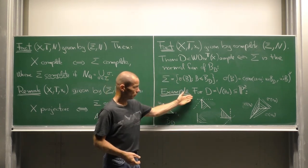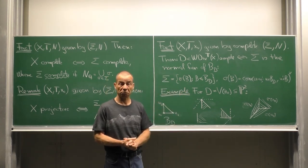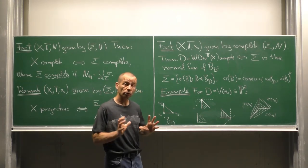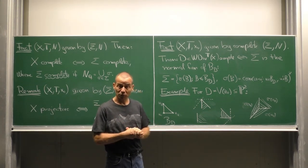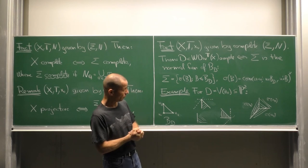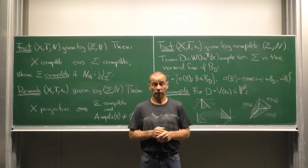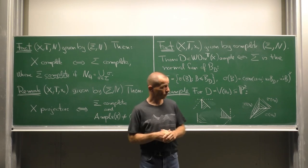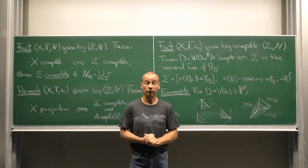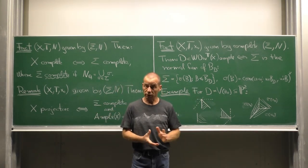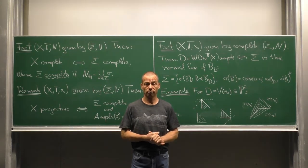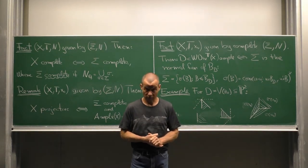Similarly we proceed with the other vertices. And then we have to look if these cones fit together to the fan sigma. And indeed we obtain the fan of the projective plane. So this tells us that this divisor is an ample divisor on P2. See you in the next unit.